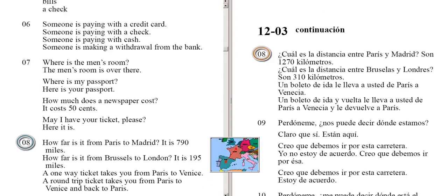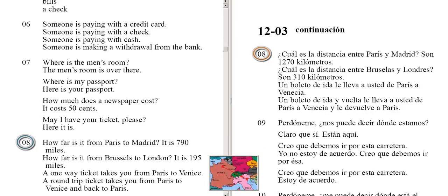How far is it from Paris to Madrid? It is 790 miles. How far is it from Brussels to London? It is 195 miles. A one-way ticket takes you from Paris to Venice. A round-trip ticket takes you from Paris to Venice and back to Paris.